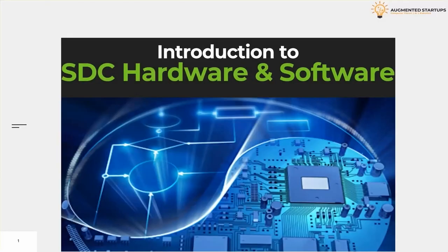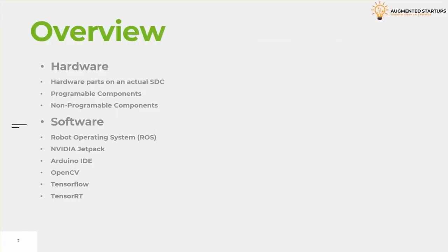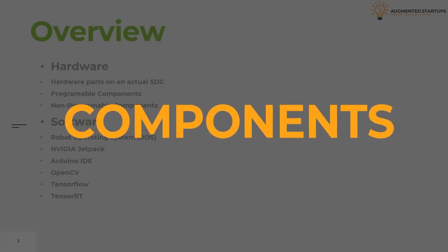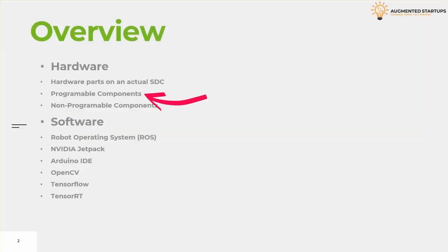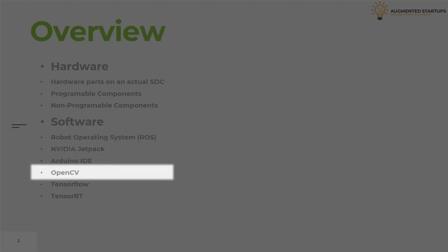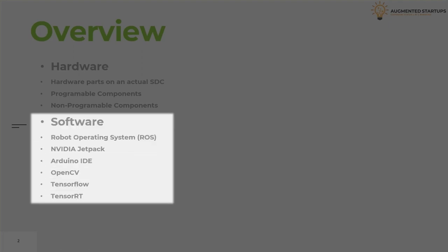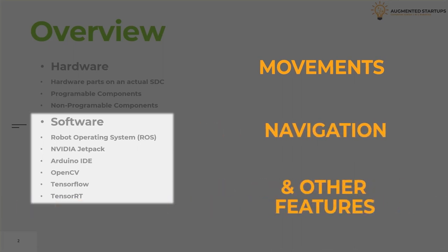In our previous lectures, we introduced the concept of the self-driving car and talked about its different components. The real challenge starts now. In this lecture, we will talk about the hardware and software components, and we will discuss the components of the self-driving car that we are going to build later in this course. Our focus will be on programmable and non-programmable components, and the required software components. The softwares we will be talking about are Robot Operating System (ROS), NVIDIA Jetpack, Arduino, OpenCV for Coding, TensorFlow, and TensorRT. These softwares will help us implement movement, navigation, and other self-driving car features.